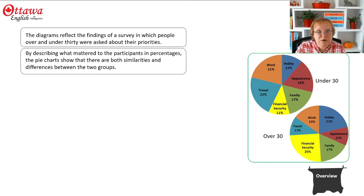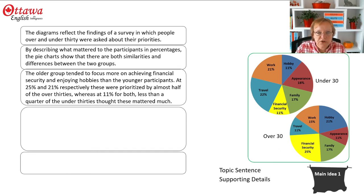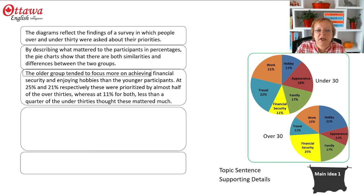Now we go to our main ideas. As you're speaking about the older age group and the larger portions, you want to make sure that you introduce your main idea with a topic sentence — just like if you were writing a paragraph, you would have a topic sentence that announces what the paragraph is about. You're doing the same thing here. You announce that you're going to talk about the older group, and then you add your details.